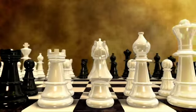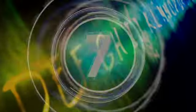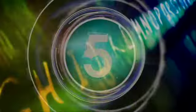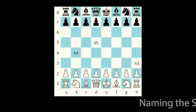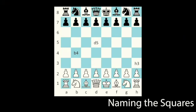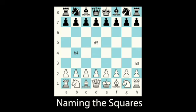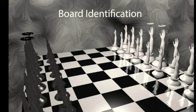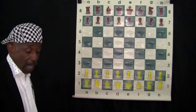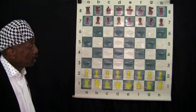Let's understand the alphabets and the numbers on the chess board so that from this point forward we can start naming the squares. We're going to find out in chess lingo how important it is to address a square instead of pointing to its location. We're still in board identification, so we're going to go over the alphabets and the numbers on the chess board.